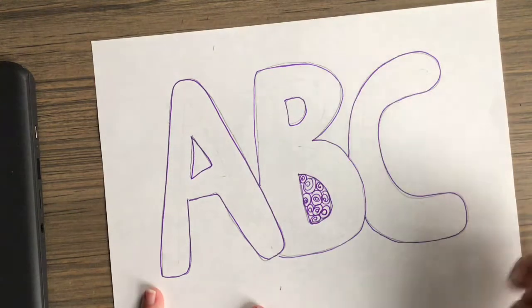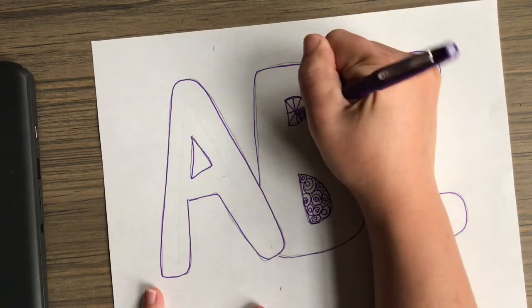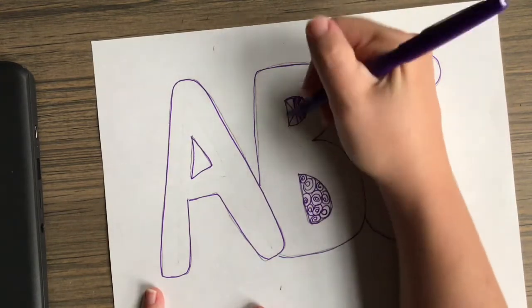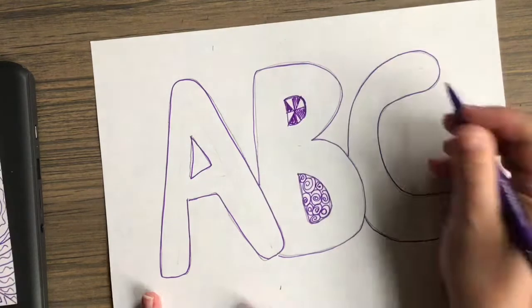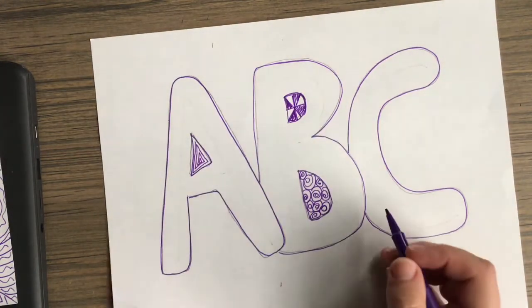So here I'm starting to fill in the negative space, the holes of the letter B, with just some different types of lines that I think will look good. Criss-cross lines, spiral lines. There's no wrong way to Zentangle really. You're just drawing whatever you think will look nice.